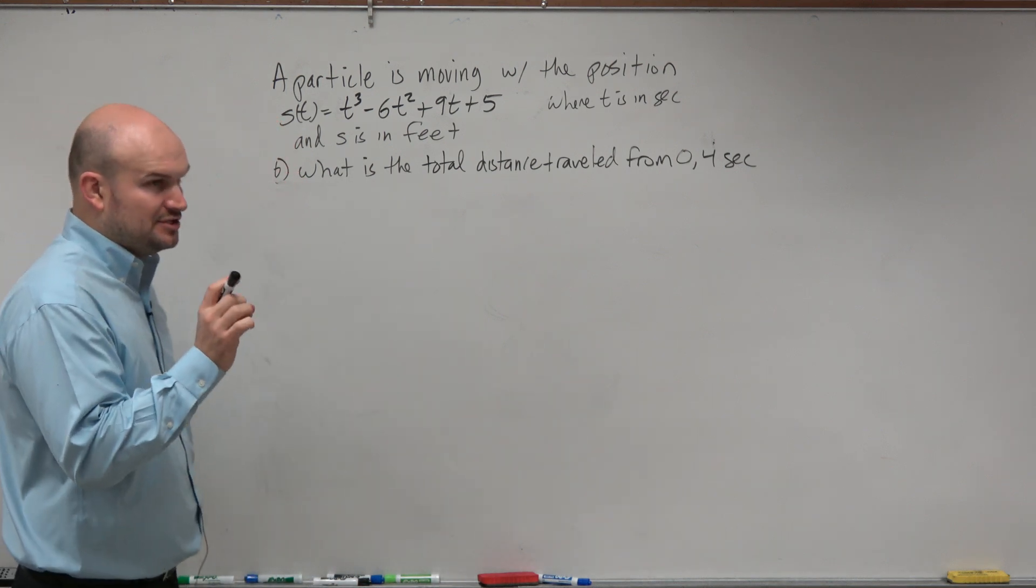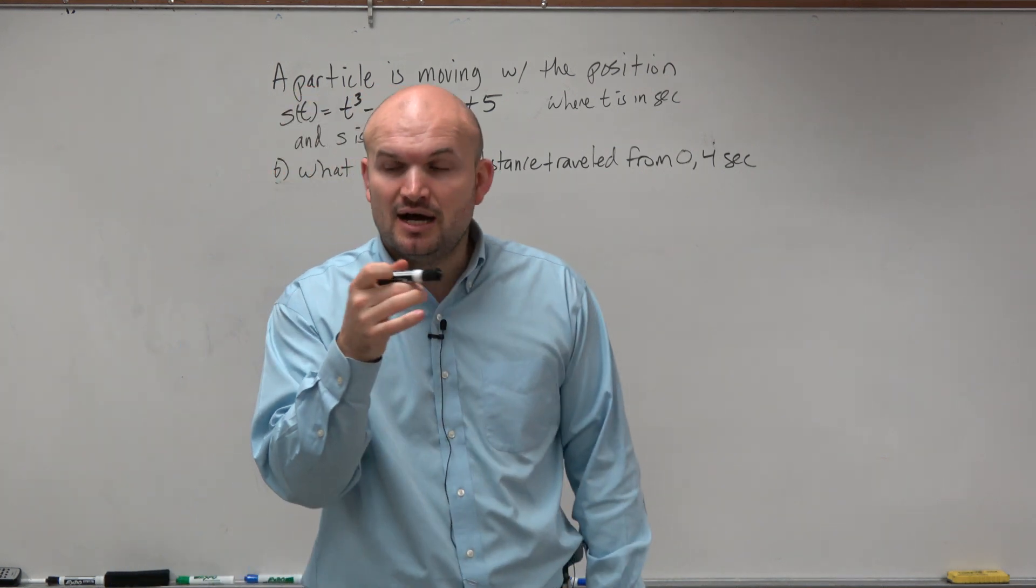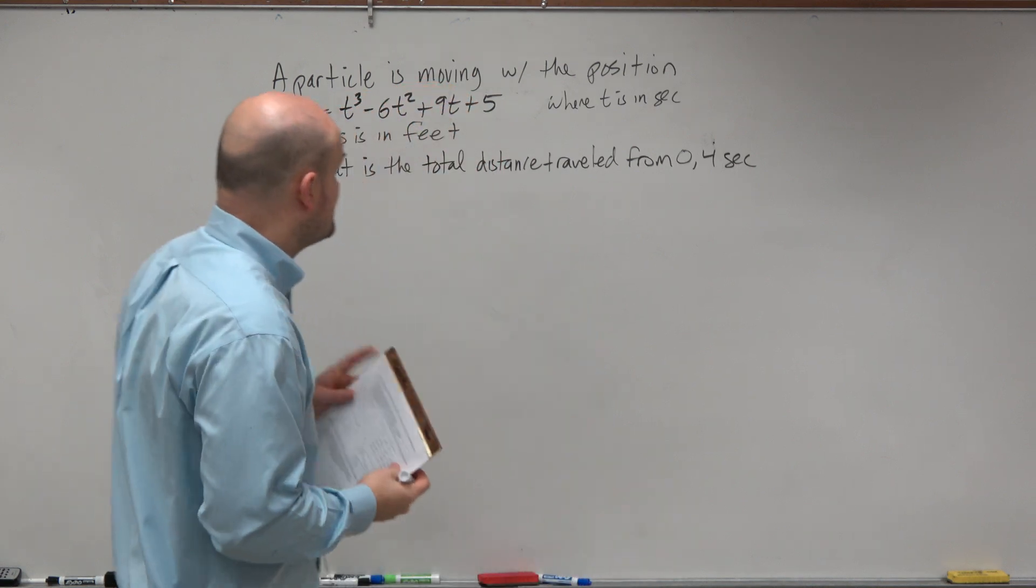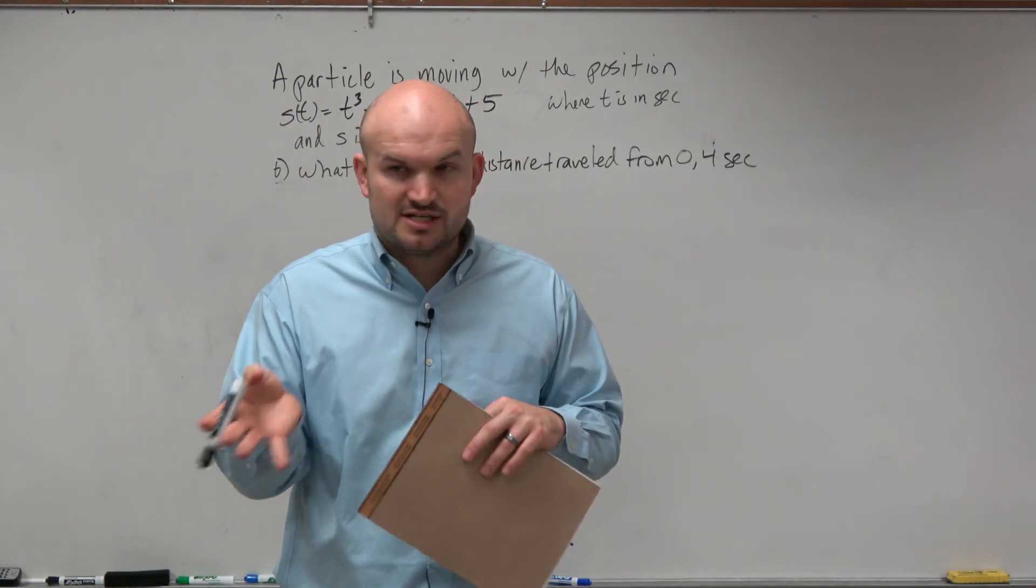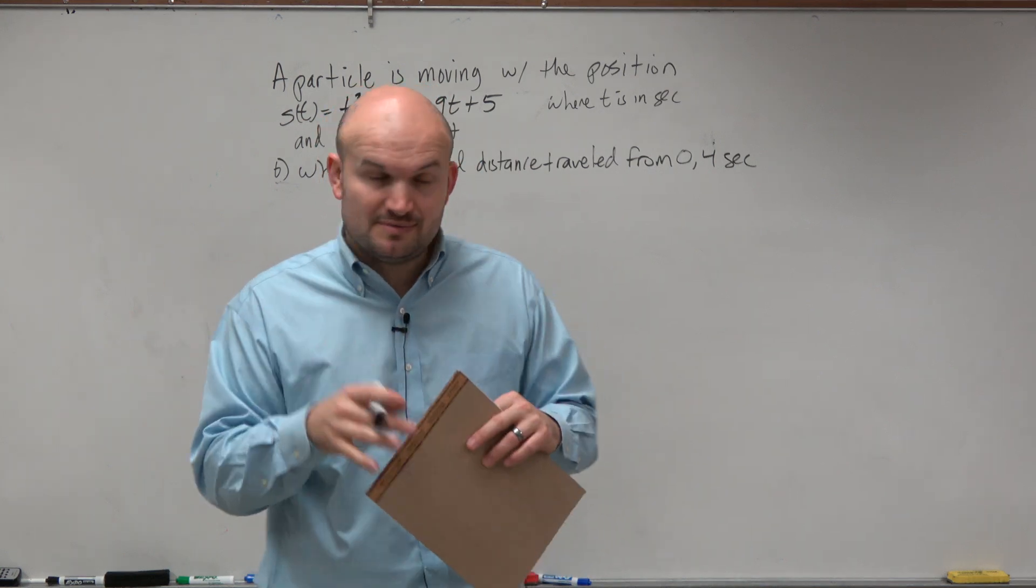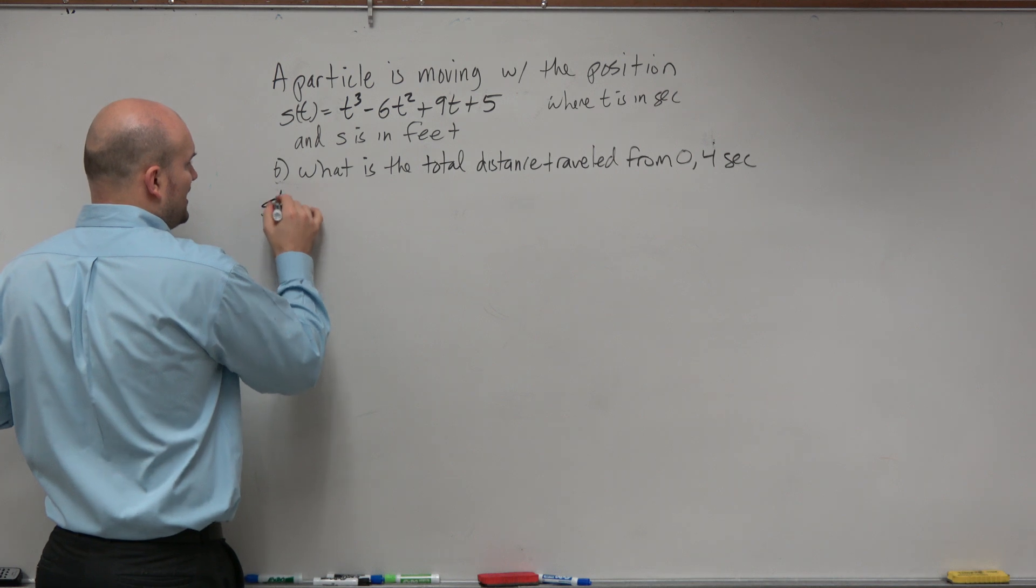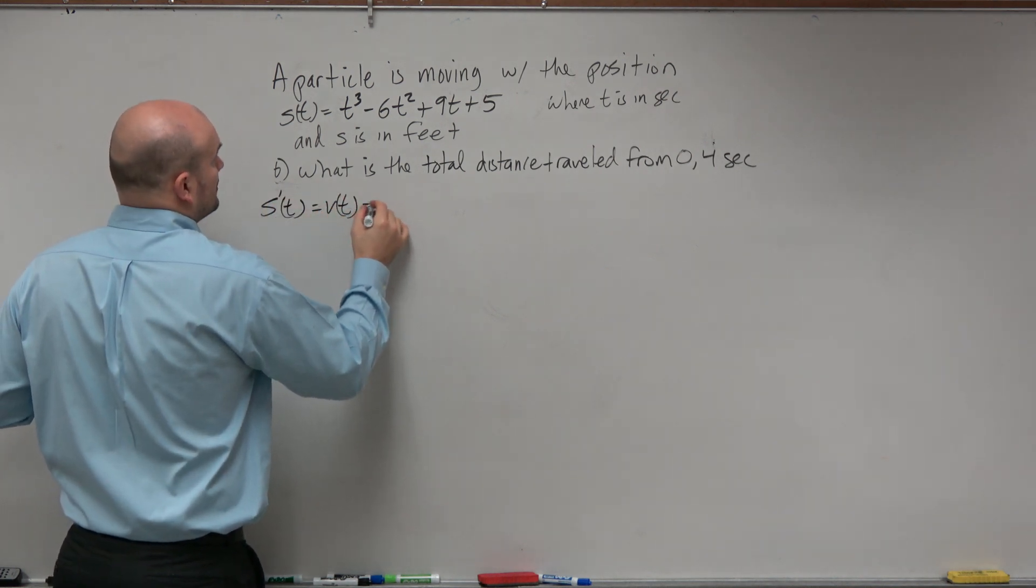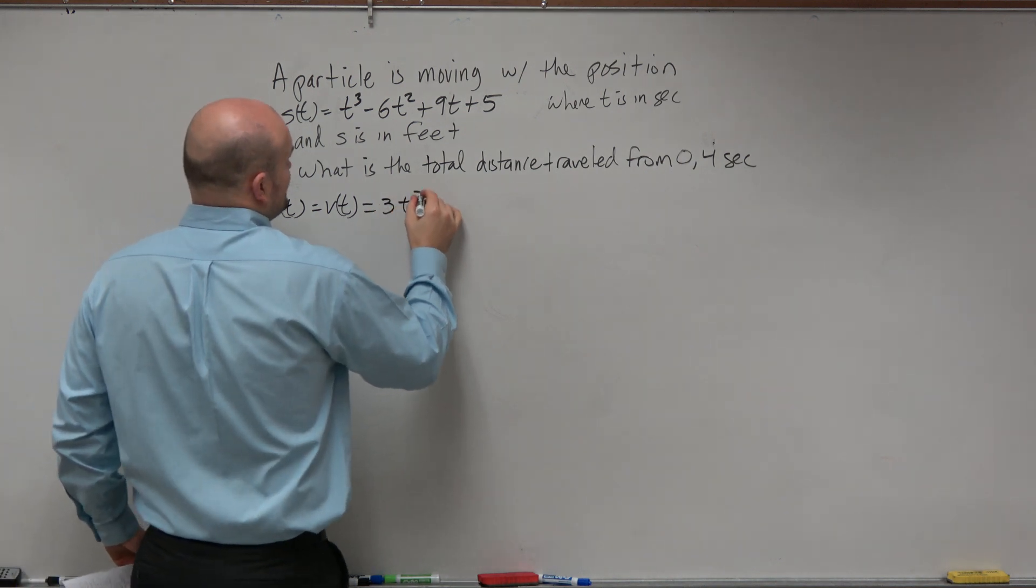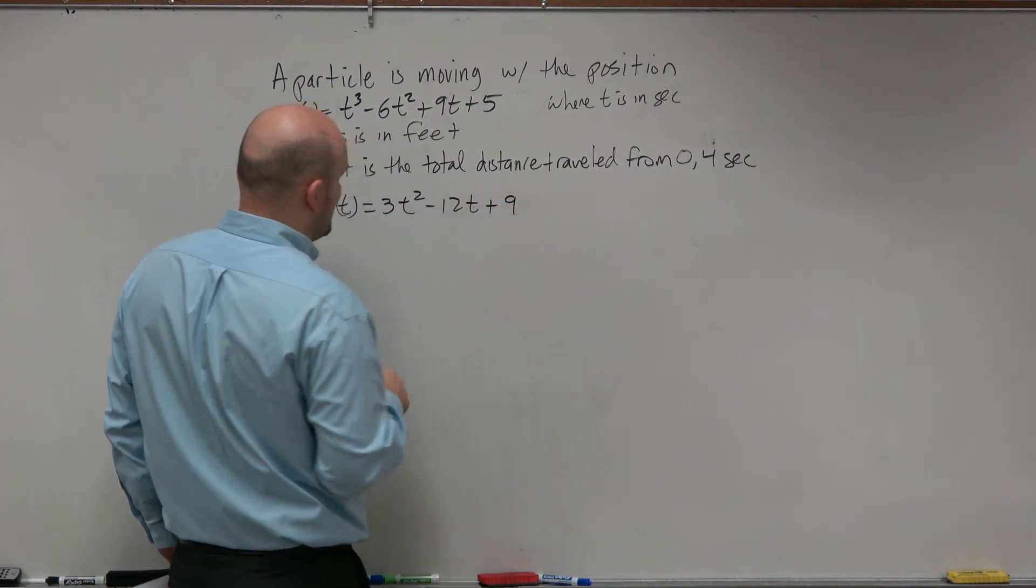What we want to do is find all the points where, between zero and four seconds, this particle is changing directions. We know that a particle is changing directions when the velocity changes from positive to negative or negative to positive. The first thing we want to do is find the velocity function, which is the prime of the position function, which in this case is going to be 3t² - 12t + 9.